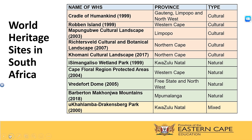Now we will take a look at World Heritage Sites in South Africa. The table on your screen gives you the name of the World Heritage Site on the left-hand side, the province in which it is located, and the type of World Heritage Site. You will note that two of those World Heritage Sites are located in more than one province. The first one is the Cradle of Humankind, which was declared a World Heritage Site in 1999, and is located in Gauteng, Limpopo and North West — it is a cultural World Heritage Site. In the following slide, you will see a map showing you where these sites are located in South Africa.